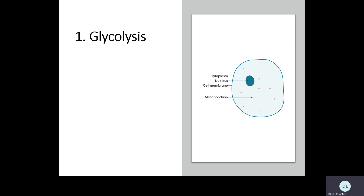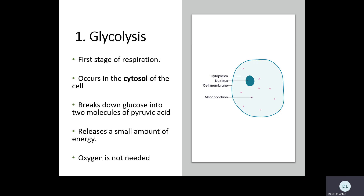The first stage is called glycolysis, which means breakdown of glucose. It happens in the cytosol of the cell. The cytosol is the liquidy part of the cell. Your cell has a cell membrane around the outside, and if it's a plant cell it also has a cell wall outside that membrane. Everything inside the cell membrane is called the cytoplasm, and the cytosol is the liquidy part of the cytoplasm, not including the organelles. Glycolysis — the first stage of glucose breakdown — happens here in the cytosol.